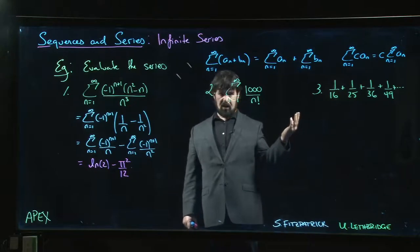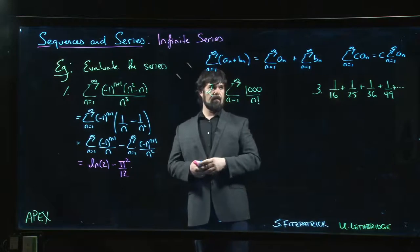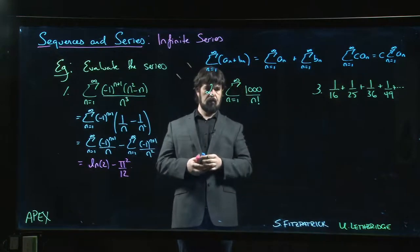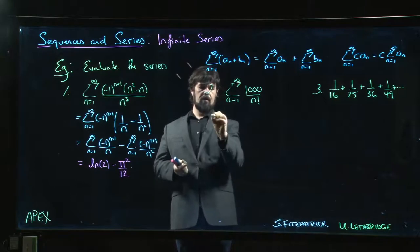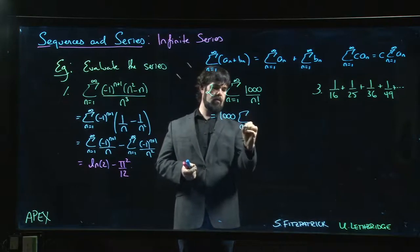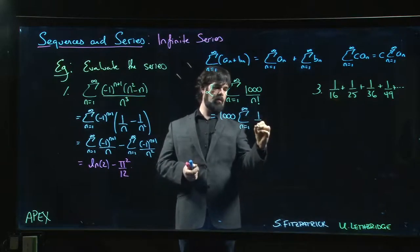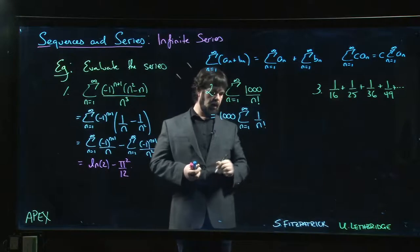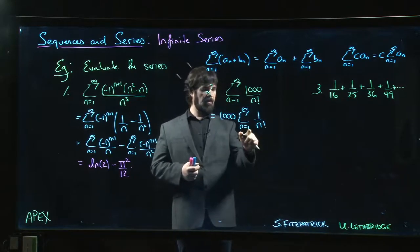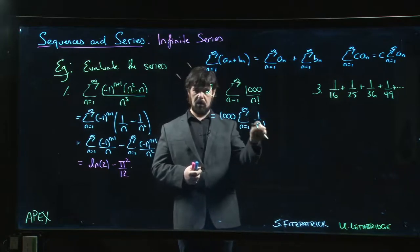How about something like this? We can use the constant multiple rule and write it as 1000 times the sum from n=1 to infinity of 1/n!. Now one of the known results given to us in the book says that if this sum started at zero, the sum from n=0 to infinity of 1/n! is actually equal to e, Euler's number.